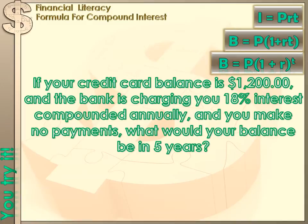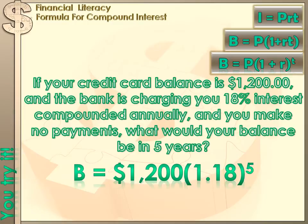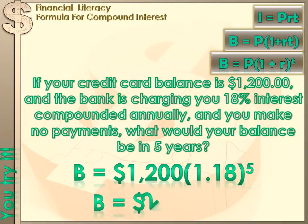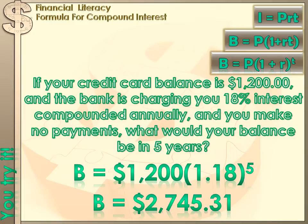In this problem, you've got a credit card balance of $1,200 and the bank's charging you 18% interest compounded annually. You're asked to figure out what your balance would be in 5 years. Using the formula B = P times (1 + R) to the t power: our principal is $1,200, 1 plus our rate of .18 gives 1.18, and we raise it to the 5th power. Calculate 1.18 to the 5th on a calculator, then multiply by 1,200 — your balance after 5 years is $2,745.31. That's more than twice what you originally owed them. That interest really adds up.